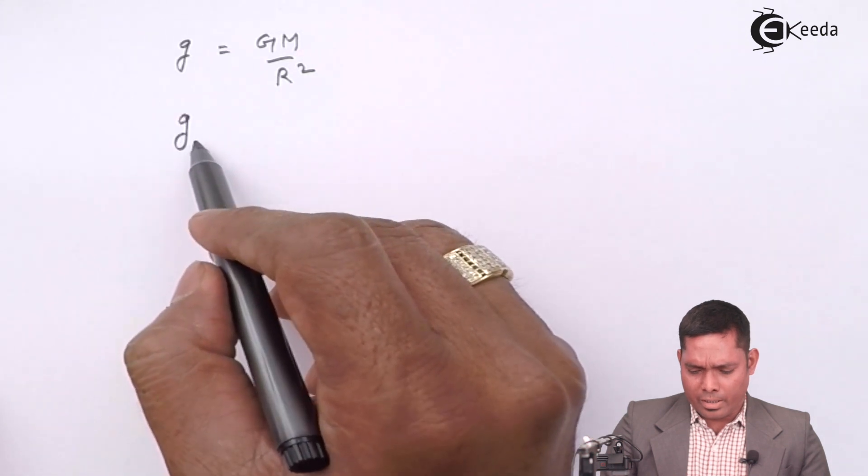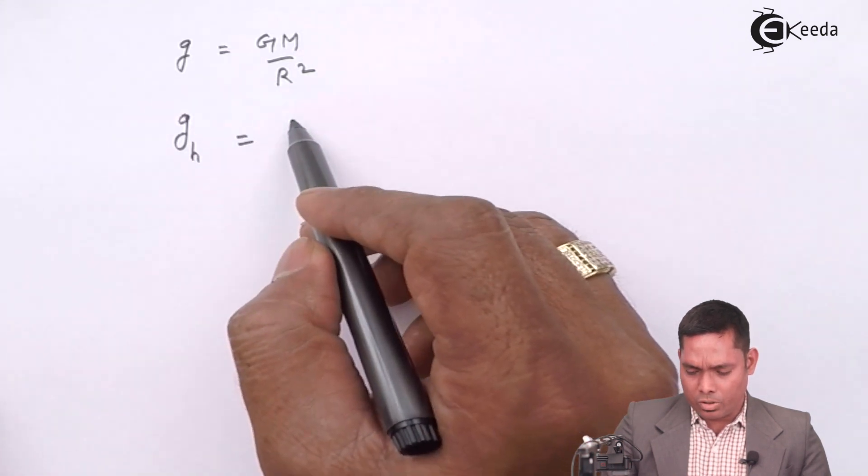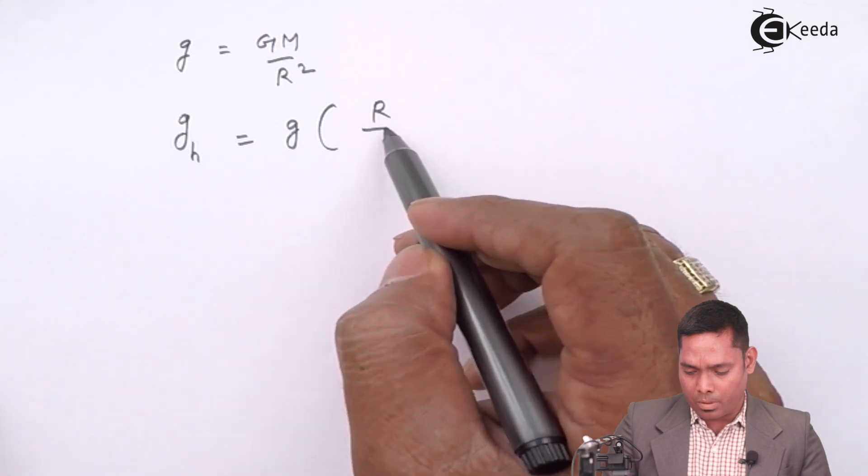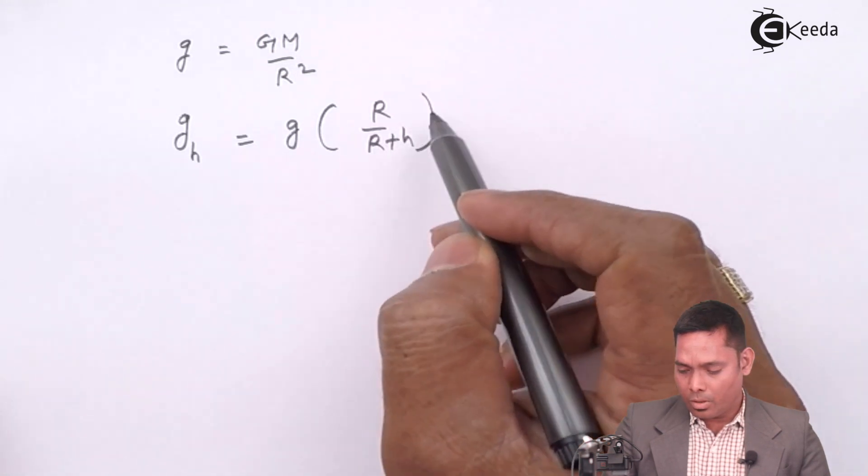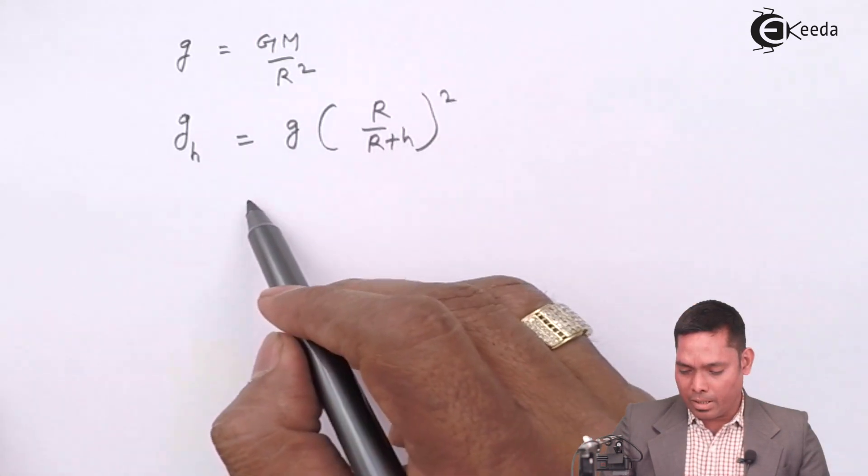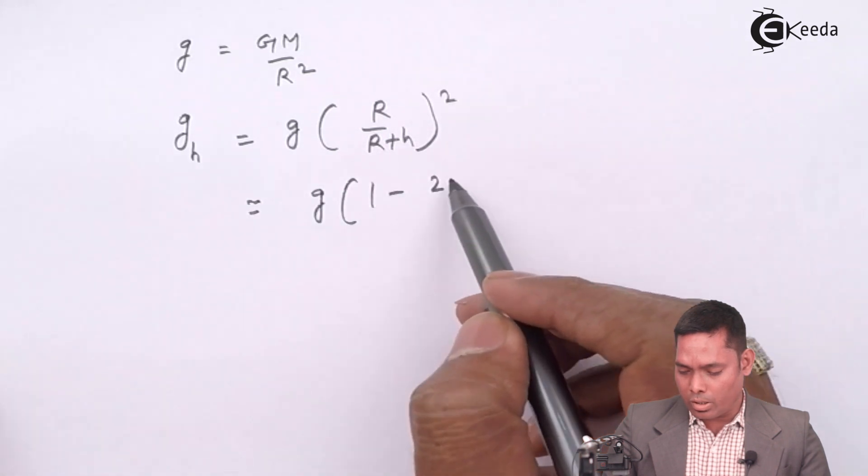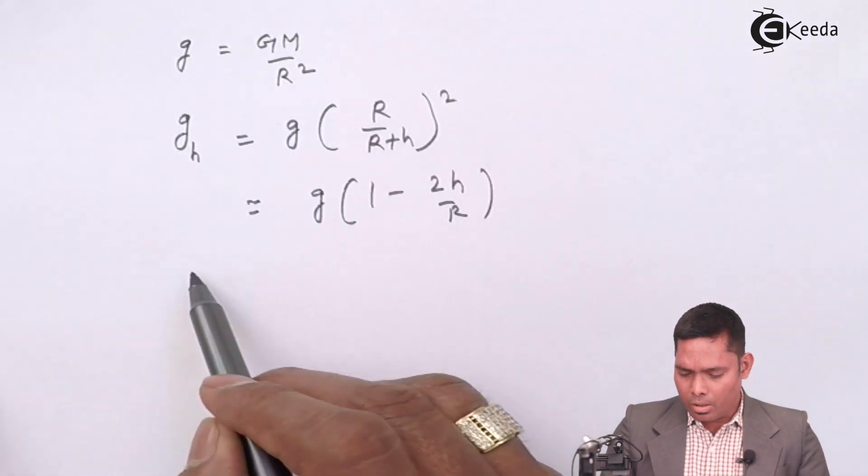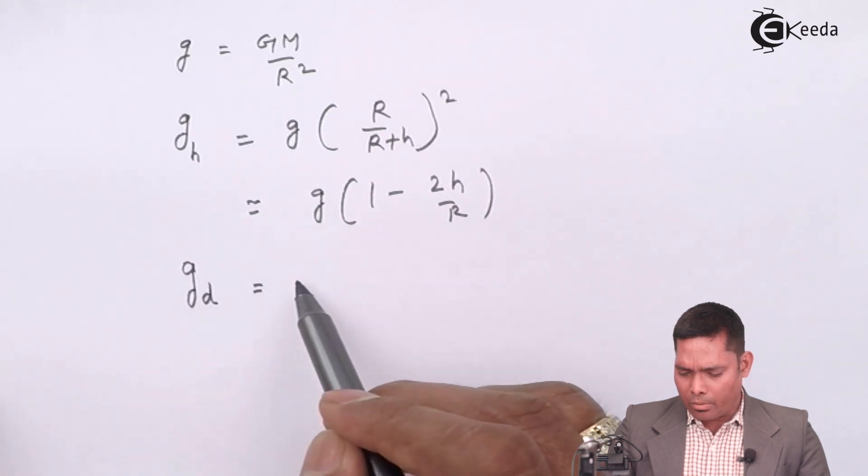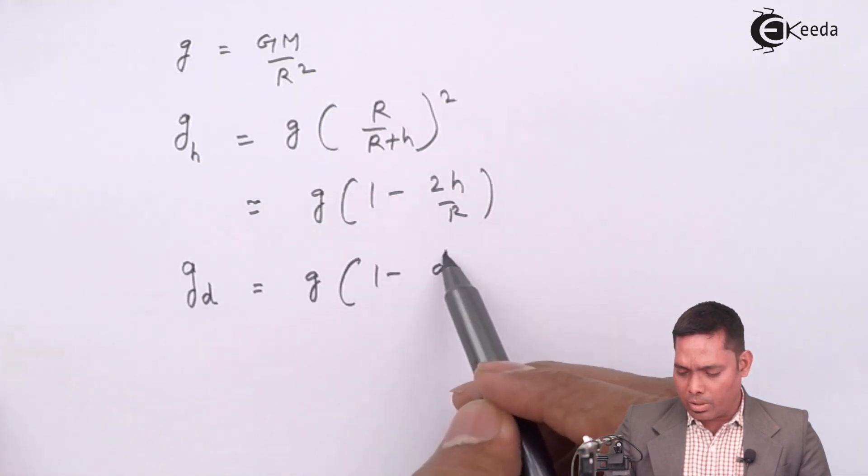g at a height h above is g times R over R plus h whole square, which is approximately written as g into 1 minus 2h over R. g at a depth d below R, we have written g into 1 minus d over R.